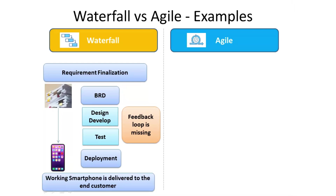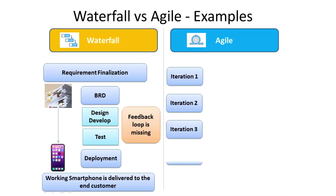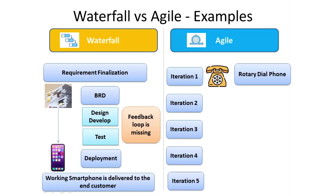In Agile, the product is built by running experiments to validate small hypotheses, and the product evolves by learning from the past and customer feedback received. At the end of each iteration, a working incremental version of the product is delivered for customer usage and feedback. As the product develops iteration by iteration, more clarity about the product is gained. In our example, at the end of each iteration, a working phone with incremental features is delivered for the customer to review, and an incremental version is released.